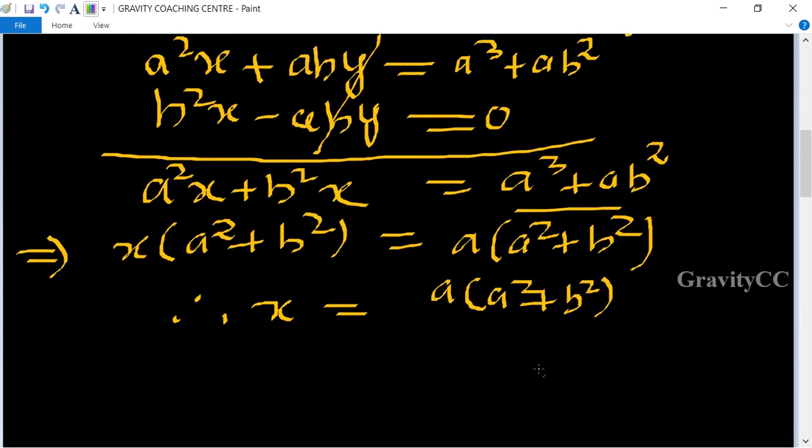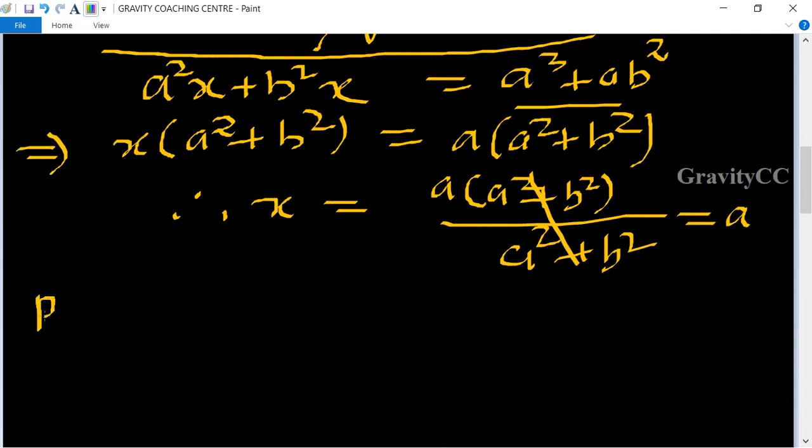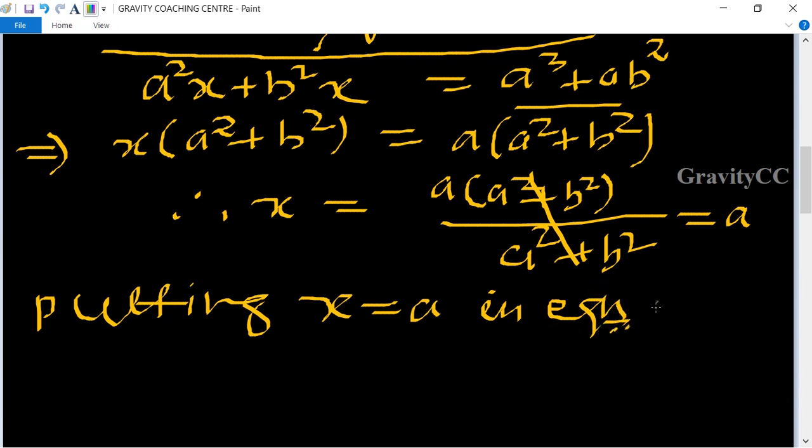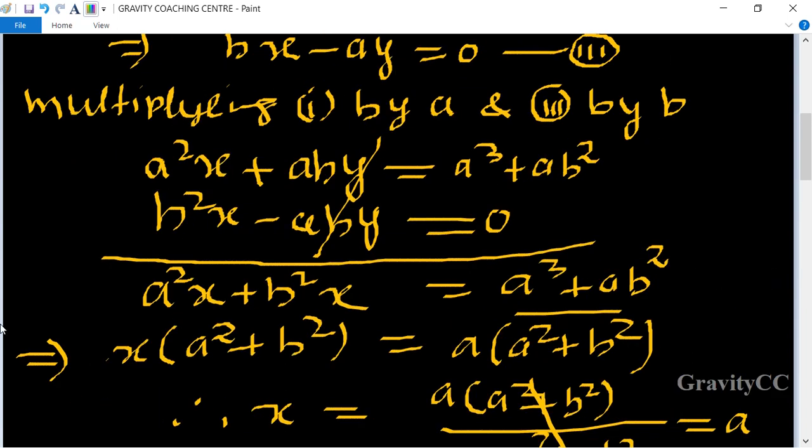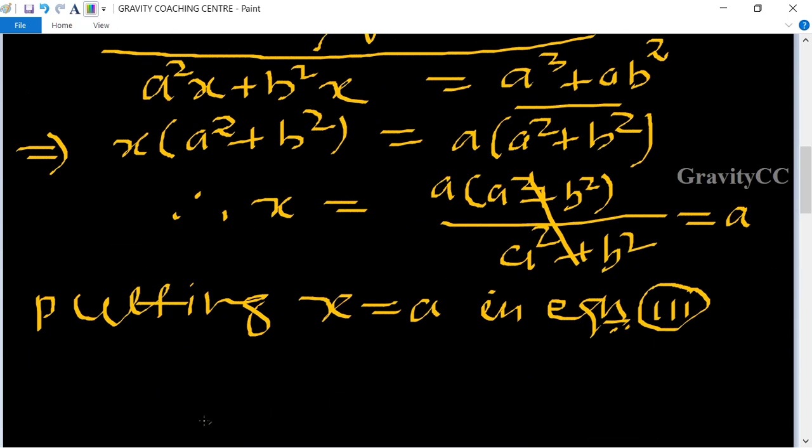Putting x = a in equation third. The third equation is bx - ay = 0.